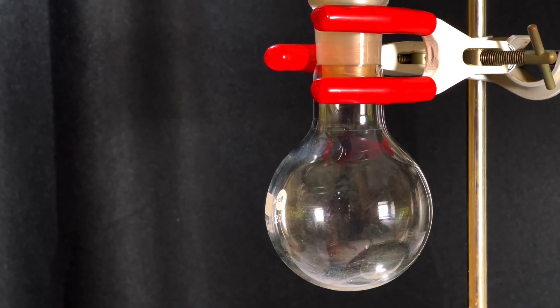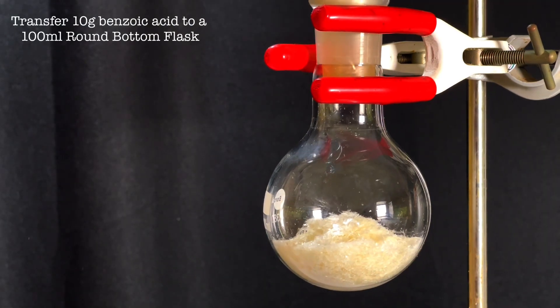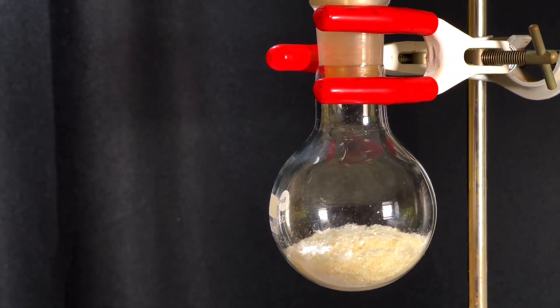Clamp a 100 milliliter round bottom flask on a stand and then transfer 10 grams of benzoic acid. Benzoic acid was synthesized in one of my previous videos, link in the description.